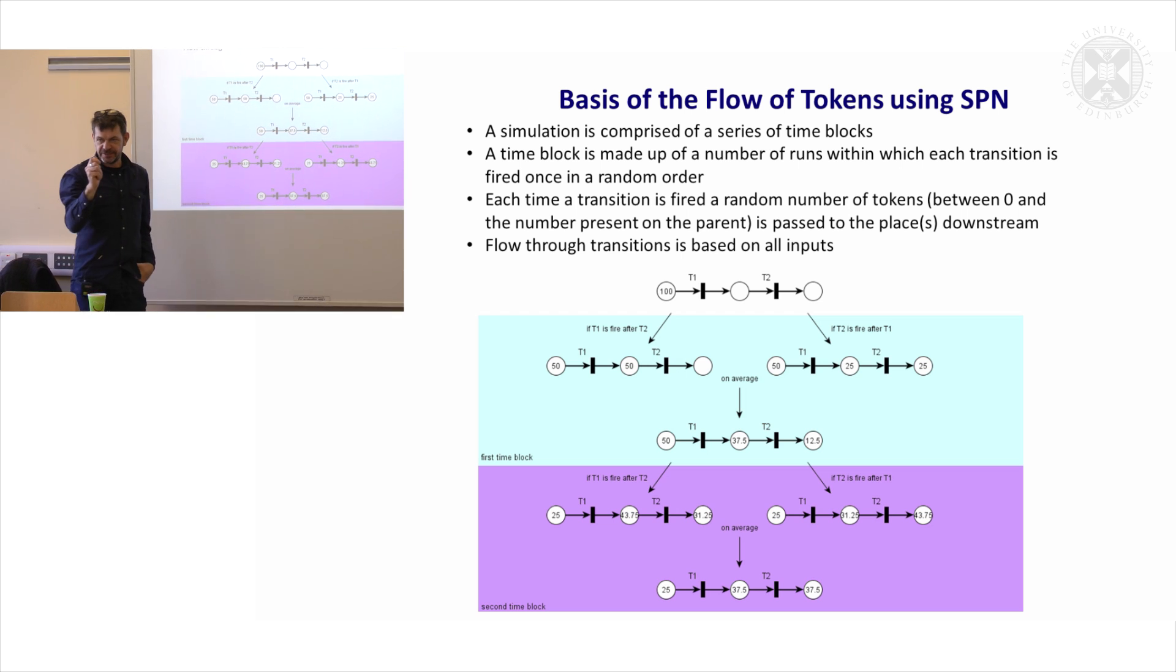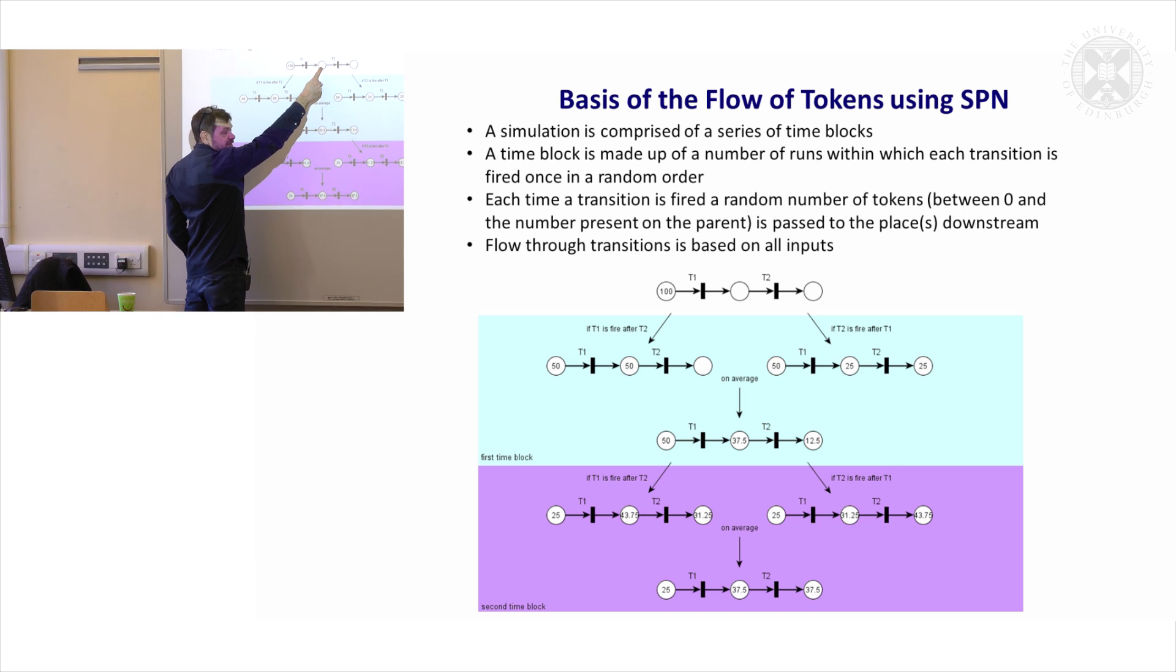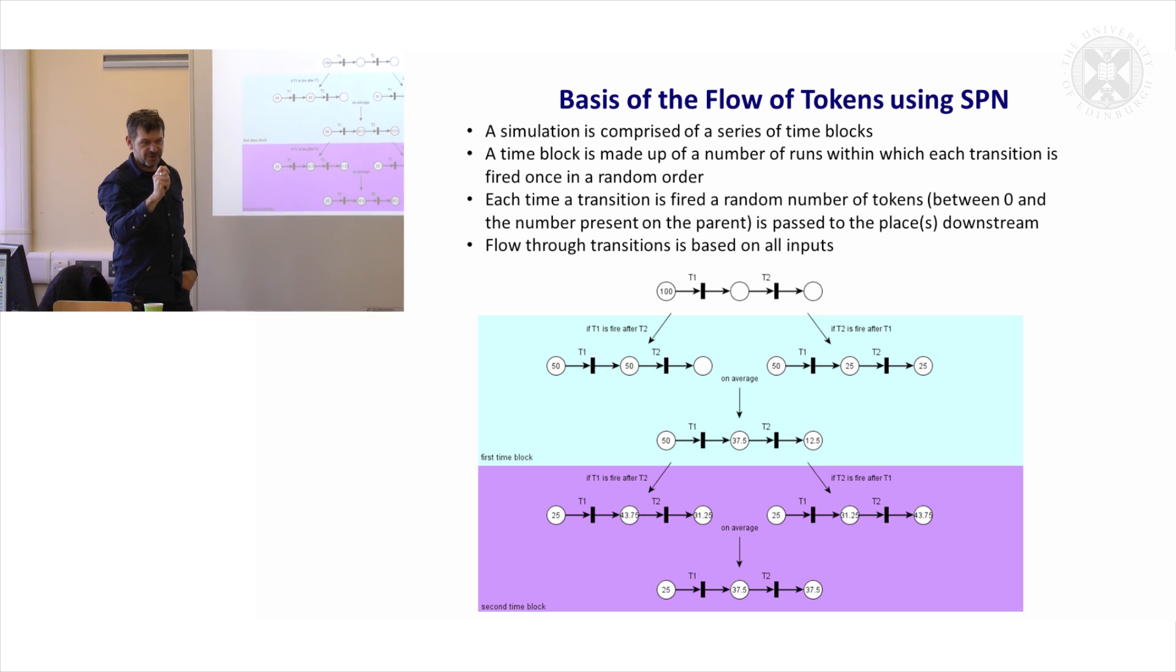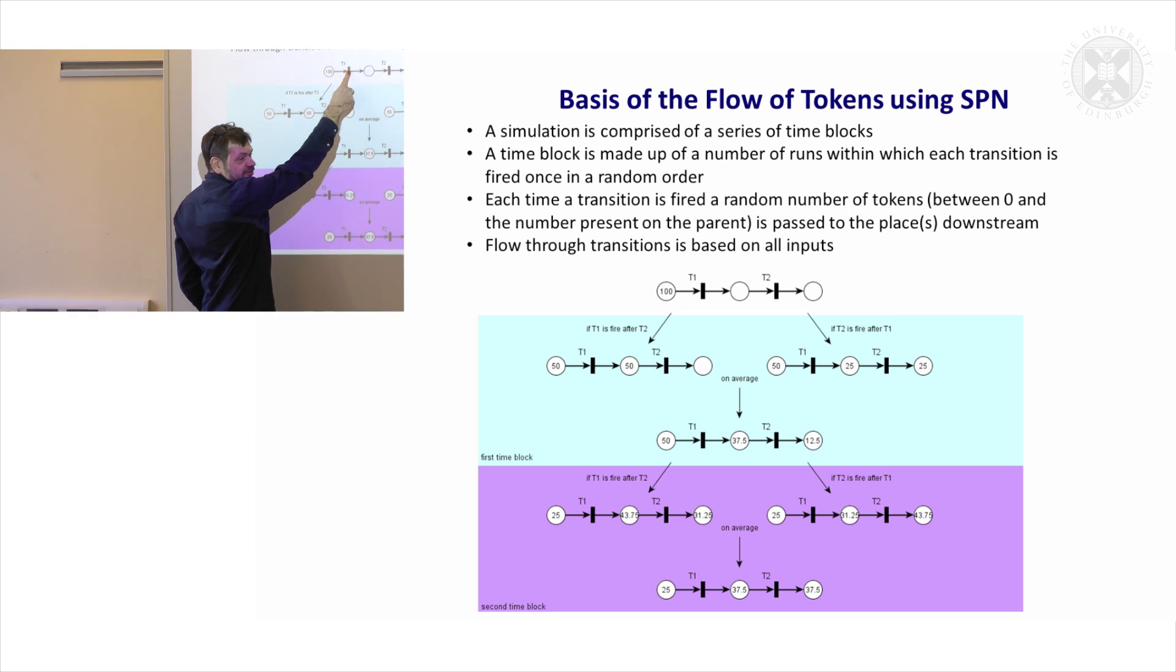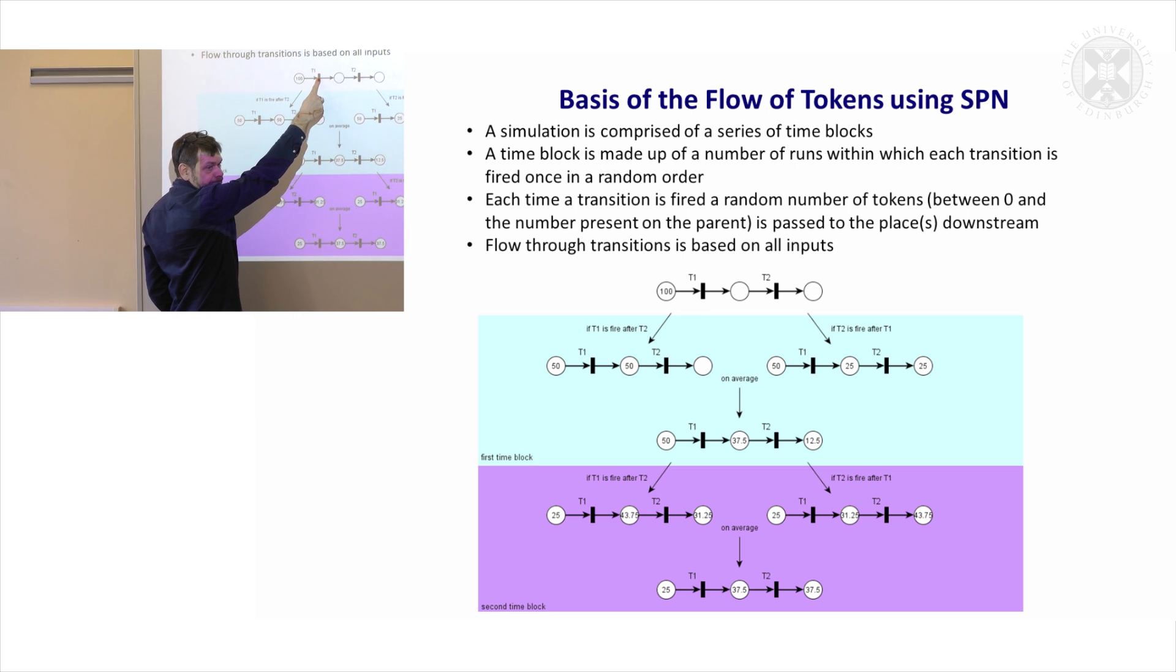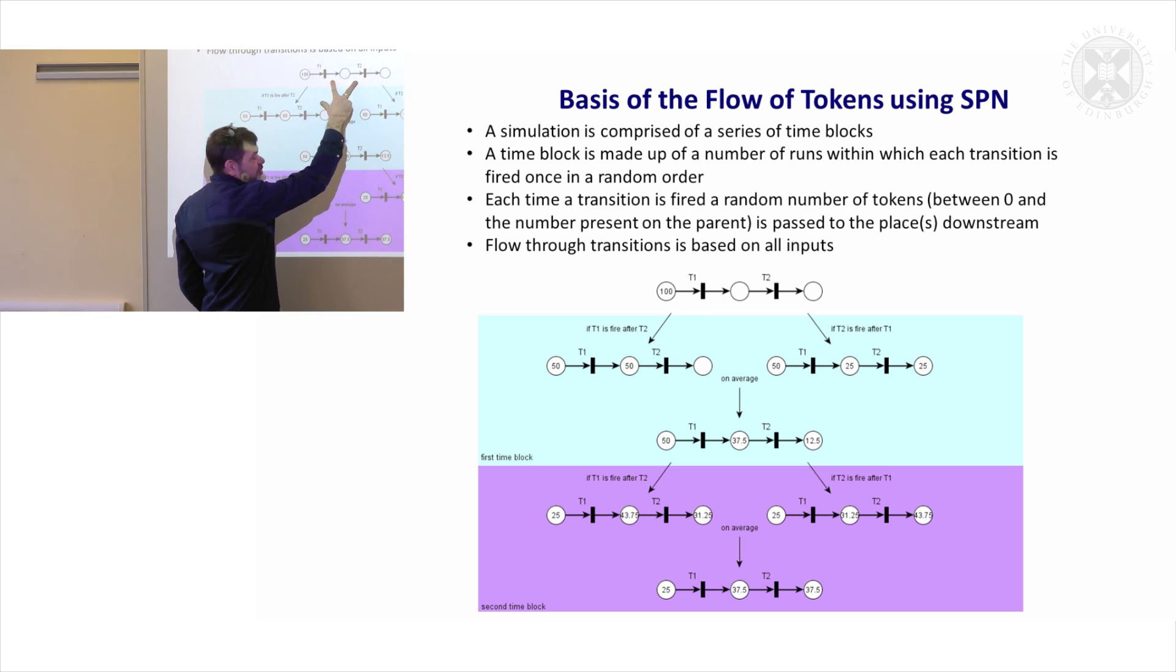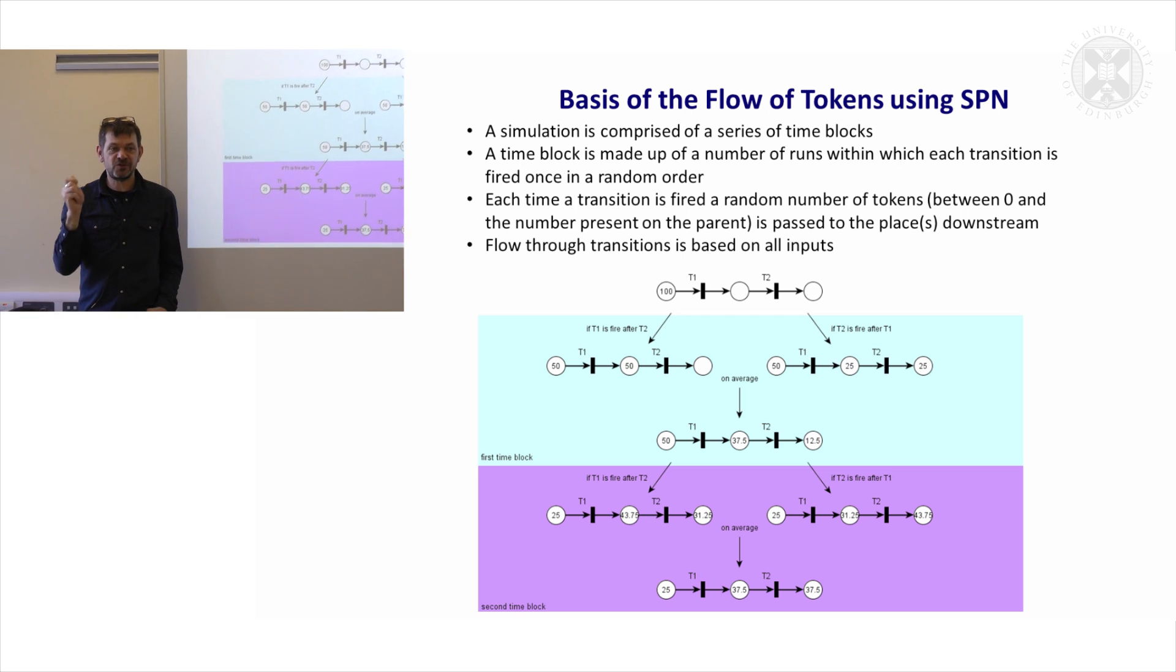And what we're going to do is we're going to fire these transitions. Now when we fire a transition, so we fire this T1, then these tokens are going to move from there to there. But the way that the algorithm works is that a random number of tokens are going to move across. So a random number between 0 and 100 are going to move from there to there when this fires.